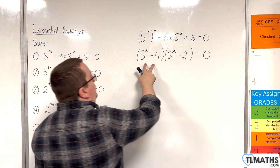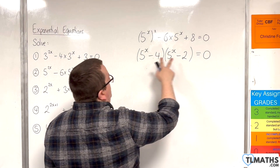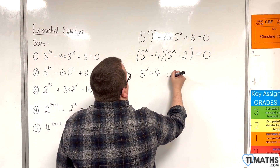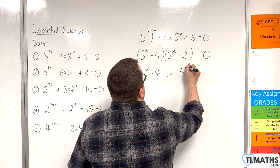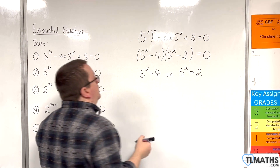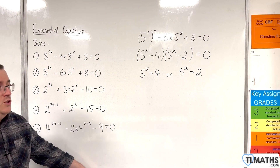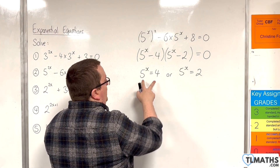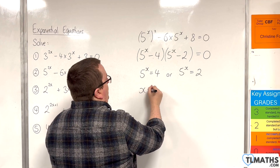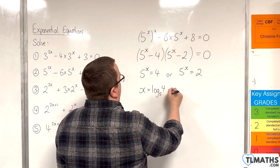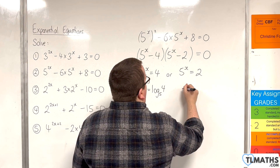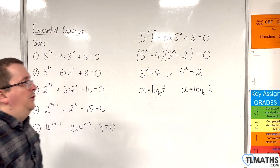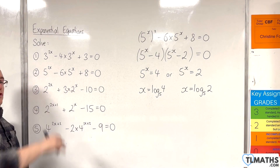Either bracket being 0 means 5 to the x equals 4, or 5 to the x equals 2. To solve these two equations we use logarithms, converting straight from exponential to logarithmic form. So x equals log base 5 of 4, or x equals log base 5 of 2. Those are the two solutions that solve the original equation.